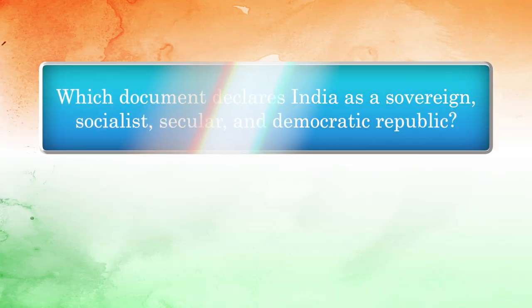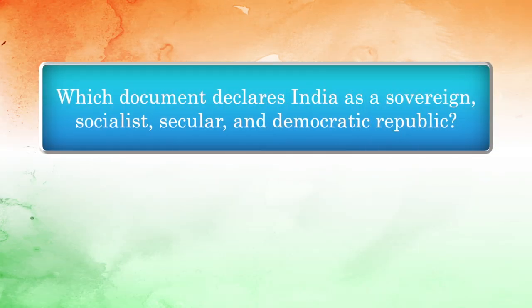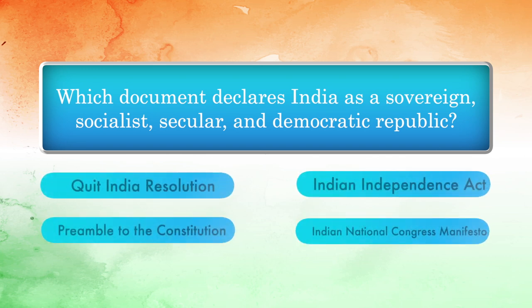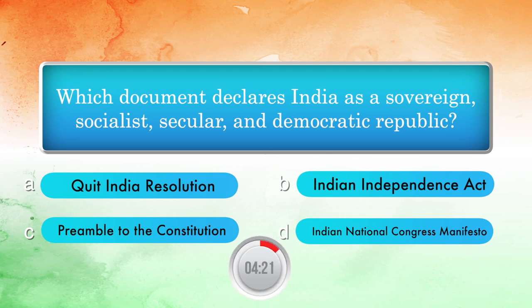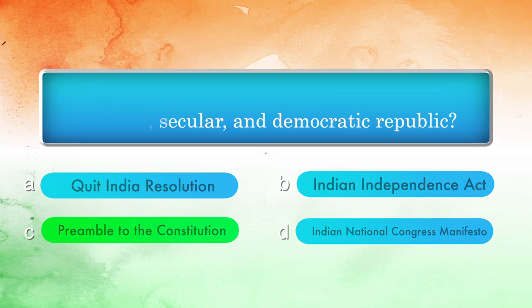Which document declares India as a sovereign, socialist, secular and democratic republic? Options: Quit India Resolution, Indian Independence Act, Preamble to the Constitution, Indian National Congress Manifesto. Answer: Preamble to the Constitution.